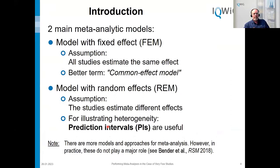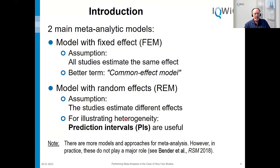Most of you will know that we have two main meta-analytic models. The first is the fixed effect model, where the assumption is that all studies estimate the same effect — a better term would be the common effect model. The second is the random effects model, where we assume that studies estimate different effects. Within this model, prediction intervals are useful for illustrating heterogeneity. I will talk only about these two main models today.